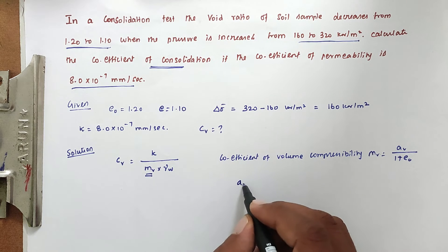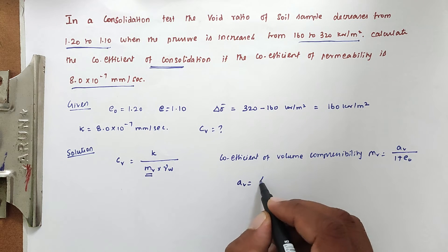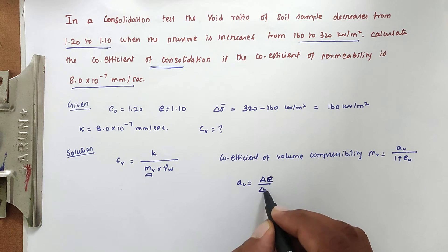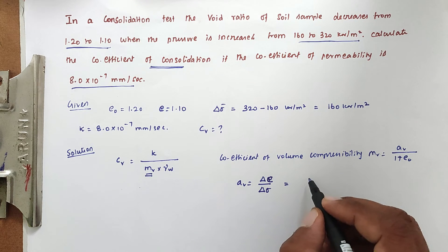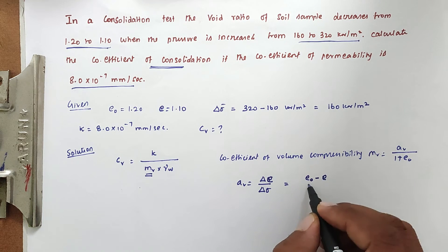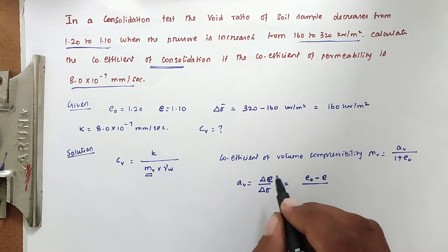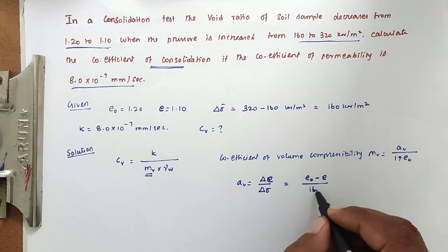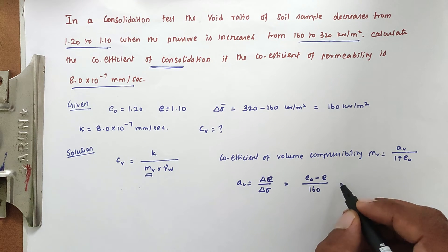So av equals the formula Δe divided by Δσ. We can find out Δe from the formula: e₀ minus e₁ divided by Δσ values which we found out is 160 kilonewton per meter square.